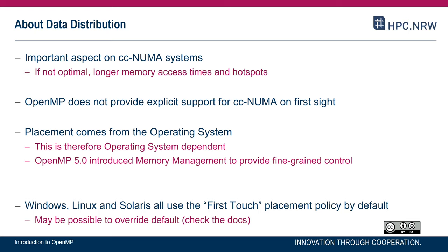At first sight, OpenMP does not provide explicit support for dealing with NUMA architectures. This is why we have to understand how the operating system behaves and exploit that understanding, because the OS is responsible for placing pages within physical memory. OpenMP version 5, released in 2018, introduced a set of features under the term memory management, which provides fine-grained, OS- and architecture-independent control about how data is placed within a NUMA node.